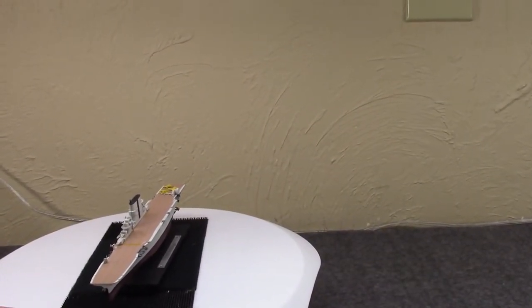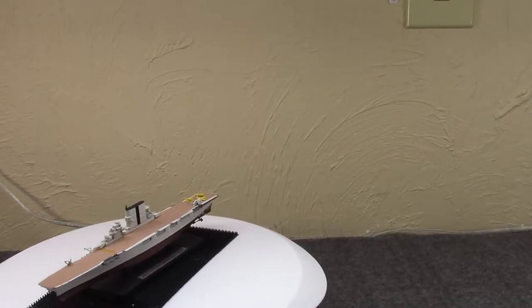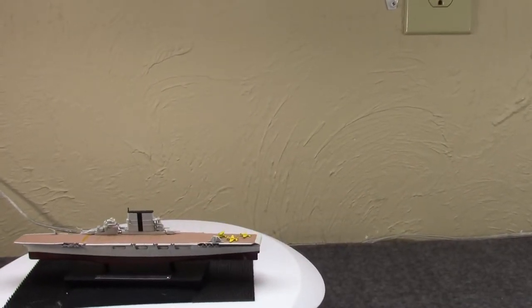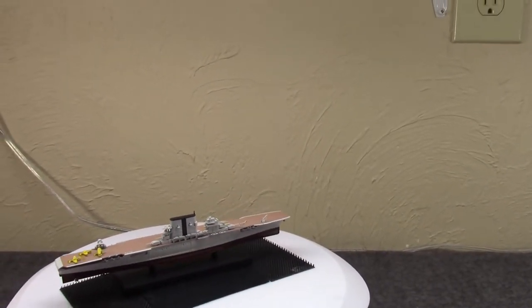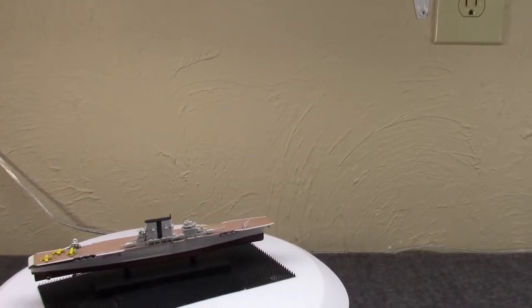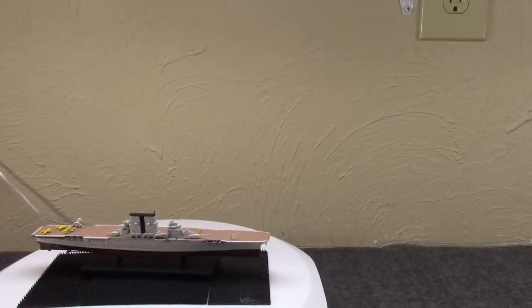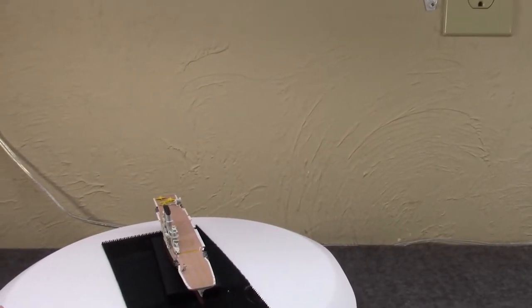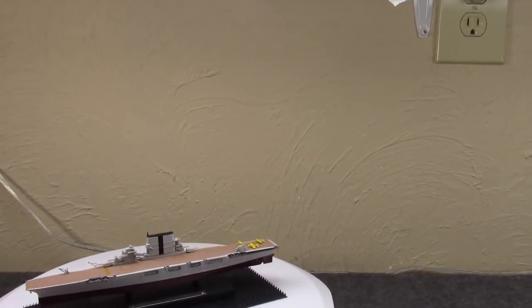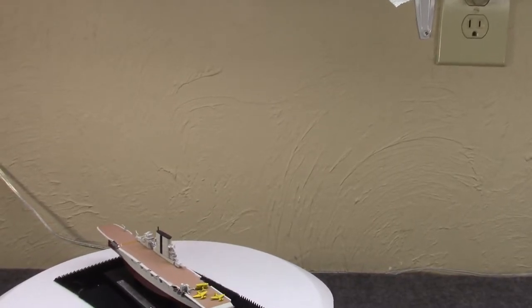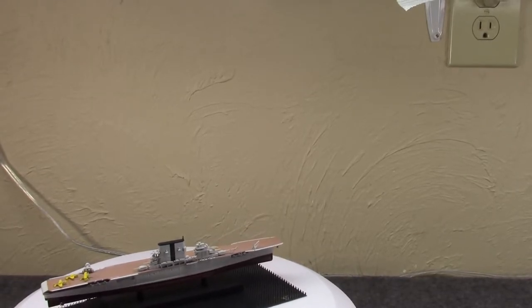USS Saratoga, CV-03. The lead ship in the class, USS Lexington, was CV-02. And as you probably know, these began life when they were laid down after World War I as battle cruisers. America had been, or the US Navy I should say, had been wanting to get newfangled battle cruisers for a long time. But various budget cuts and other funding things meant that it just didn't happen.